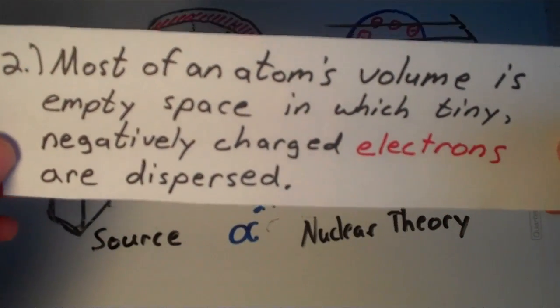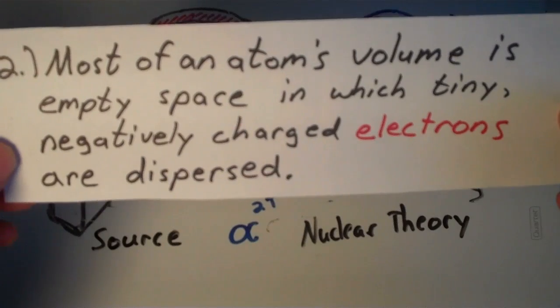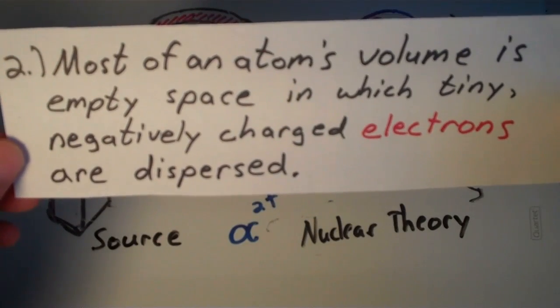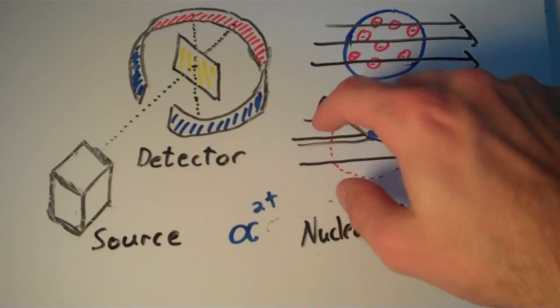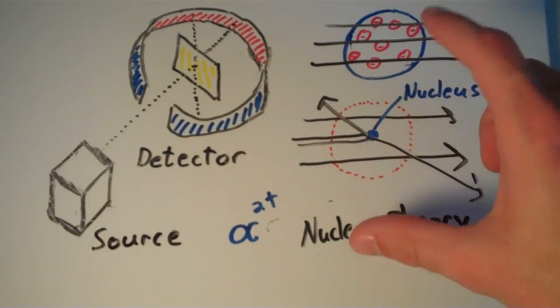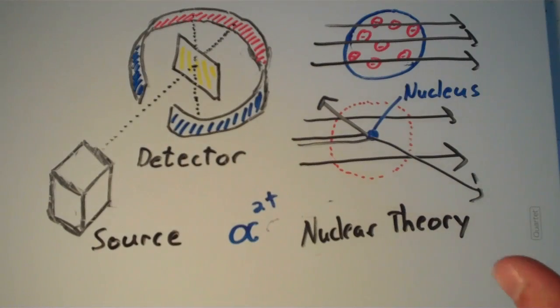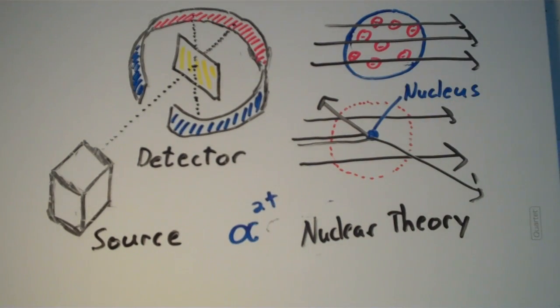Secondly, most of an atom's volume is empty space in which tiny negatively charged electrons are dispersed. So this cloud, this is supposed to be like a cloud of electron density. It's mostly empty space and there's tiny, tiny electrons that are dispersed among this empty space.